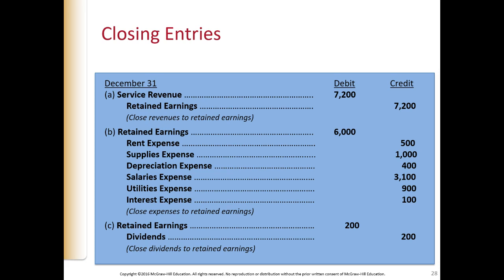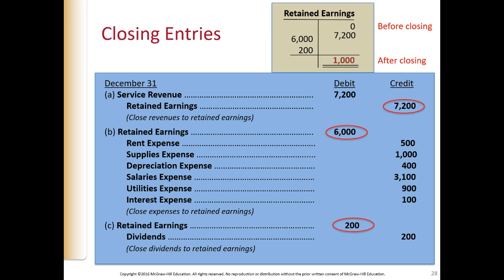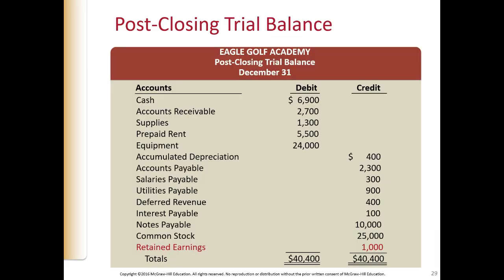All the balance sheet accounts are permanent accounts — they carry over. The cash you have at the end of one year is the same amount you have at the beginning of the next year. Here's a post-closing trial balance: retained earnings is now $1,000. We have taken off all the revenue accounts, expense accounts, and the dividend account. That's the end of Chapter 3 — there's a lot of detailed information here, so make sure you spend a lot of time with it. Good luck with your studies.